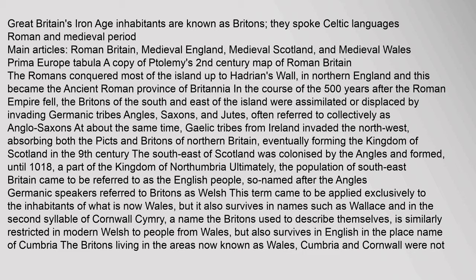Roman and Medieval period: The Romans conquered most of the island up to Hadrian's Wall in northern England, and this became the ancient Roman province of Britannia. In the course of the 500 years after the Roman Empire fell, the Britons of the south and east of the island were assimilated or displaced by invading Germanic tribes — Angles, Saxons and Jutes, often referred to collectively as Anglo-Saxons. At about the same time, Gaelic tribes from Ireland invaded the north-west, absorbing both the Picts and Britons of northern Britain, eventually forming the Kingdom of Scotland.